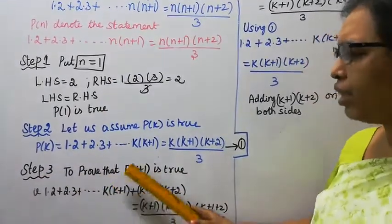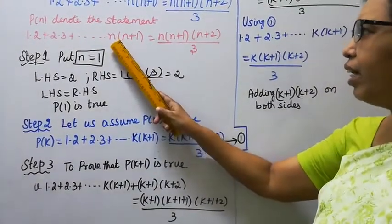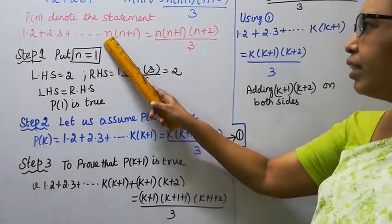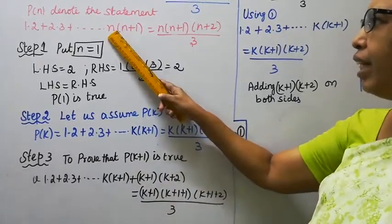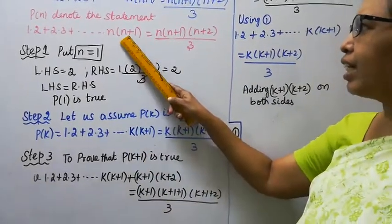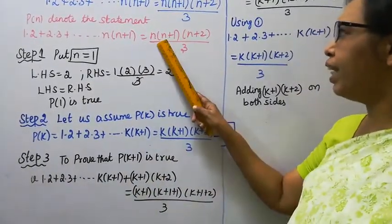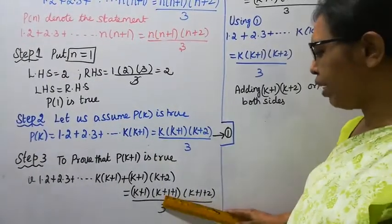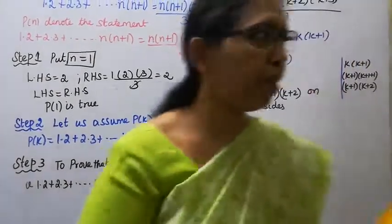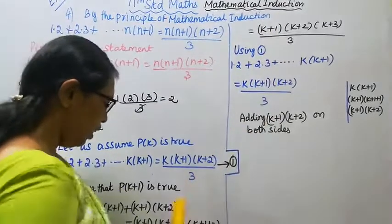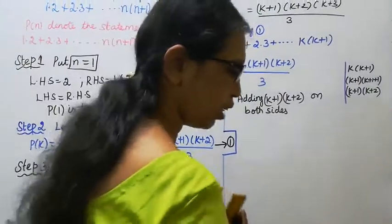Step 3: To prove that P(k+1) is true. Using P(k), we get the result: k(k+1)(k+2)/3. Adding (k+1)(k+2) on both sides, the right hand side becomes k(k+1)(k+2)/3 + (k+1)(k+2), giving us (k+1)(k+2)(k+3)/3. This is how we can prove P(k+1) is true.